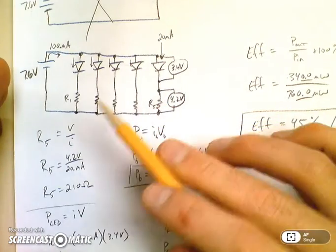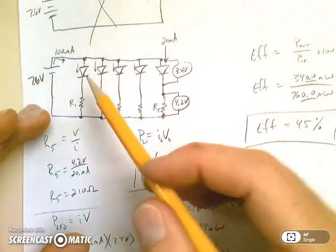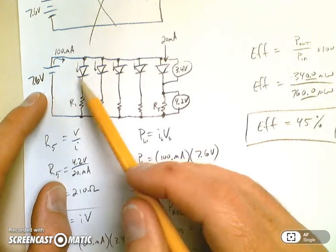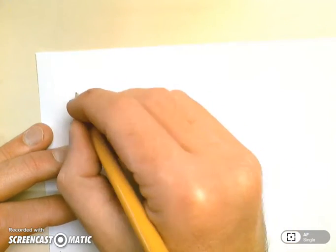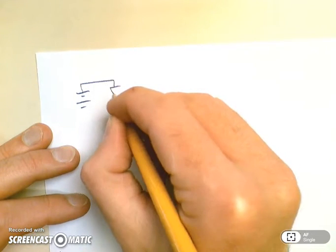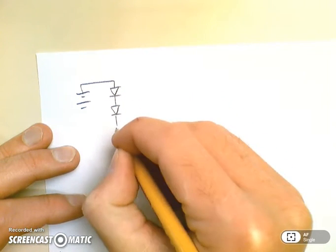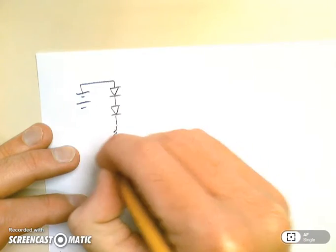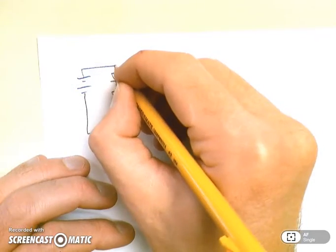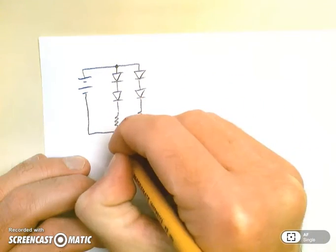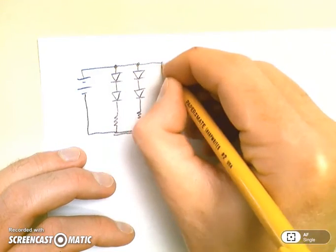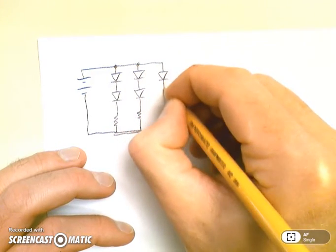So how else could we arrange these LEDs? Well, I noticed that 7.6 volts is bigger than two times this voltage value. So maybe I have an arrangement where I double up the LEDs. So I put two LEDs in series with the resistor, and I do that for another branch. And then I do a third branch, but this one only has one LED and one resistor.